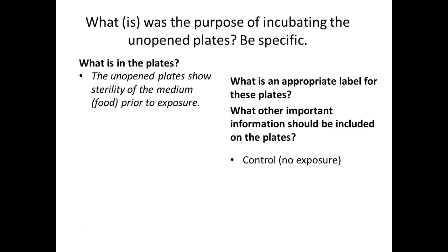What else did we put on these plates? Important information that scientists include: the date, in this case different temperatures, and identifying information like name or class. For our other plates, we put what the exposures were, the date, and the temperature because we're using different temperatures. Writing around the edge of the plate helps visualize it better. We write on the bottom where the food is — the lid can be separated and the information could be lost.